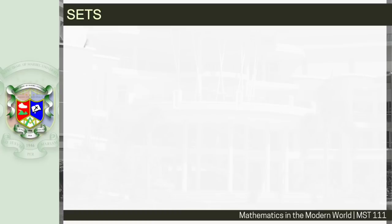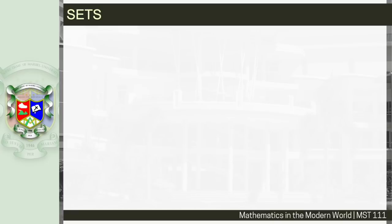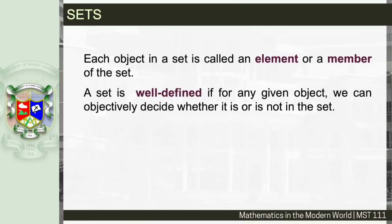What is a set? A set is a collection of objects. For example, we have here a collection of toys, a collection of books, or even a collection of numbers — we call them a set. Each object in a set is called an element or a member of the set. A set is well-defined if for any given object we can objectively decide whether it is or is not in the set.